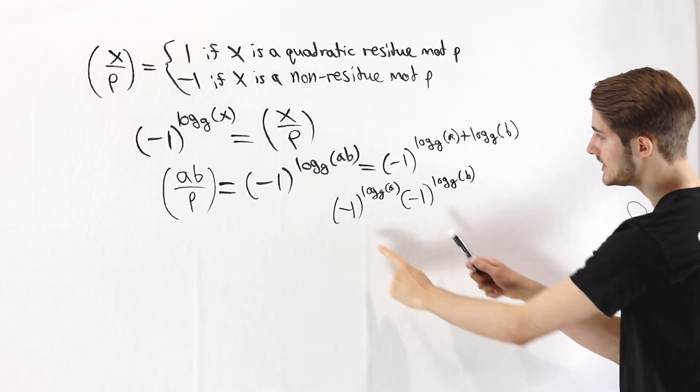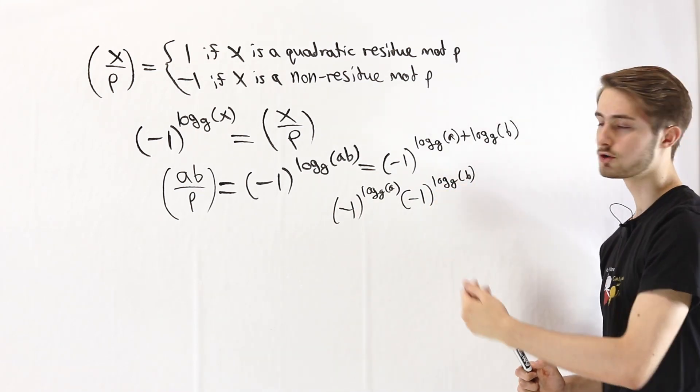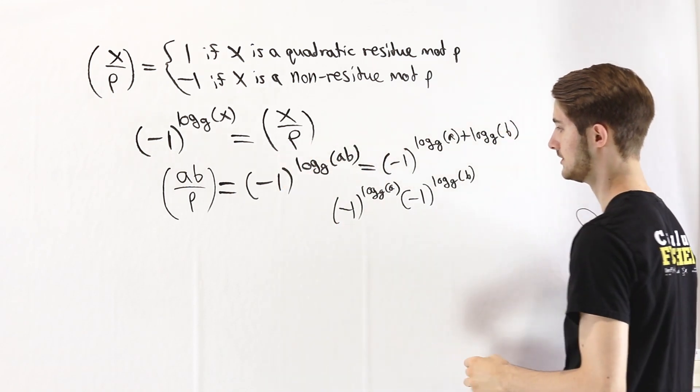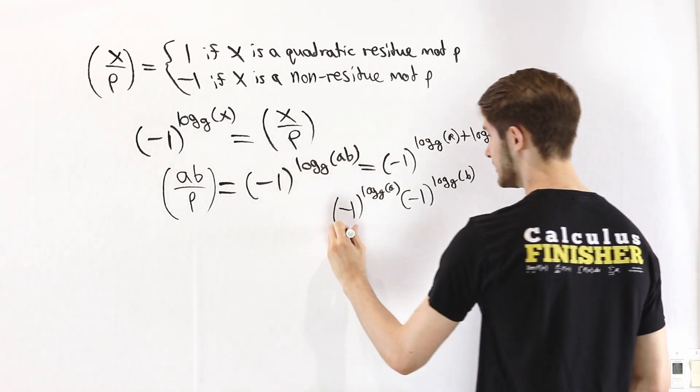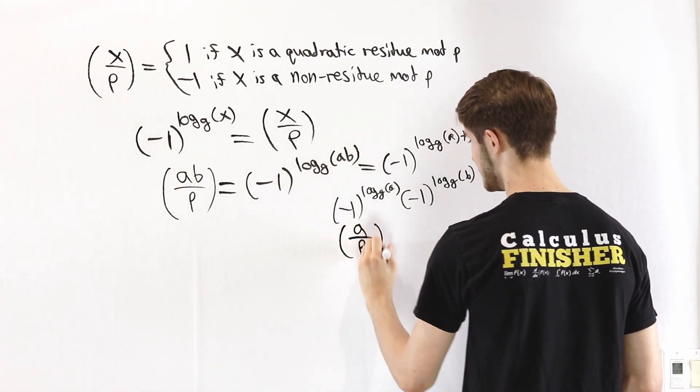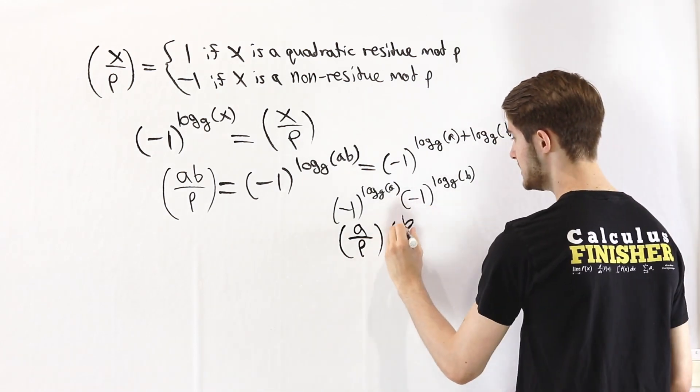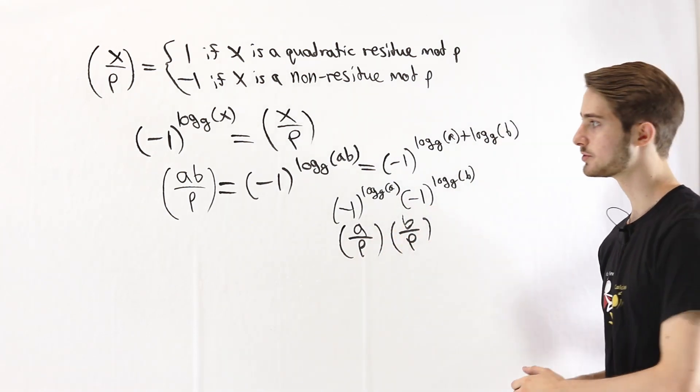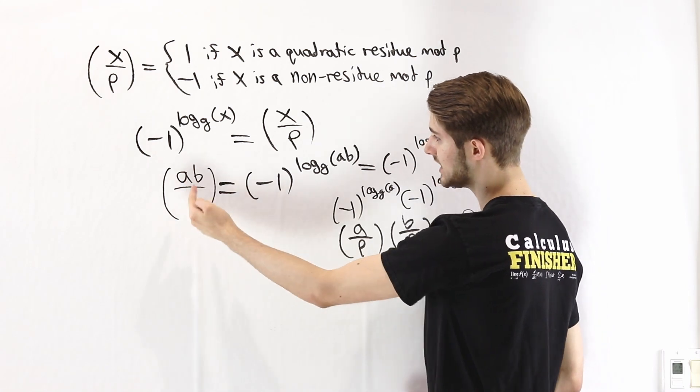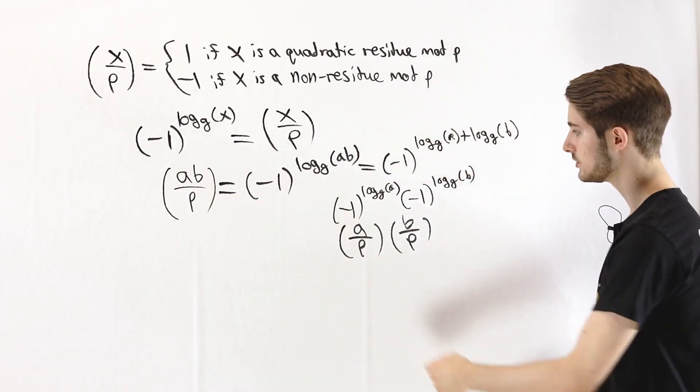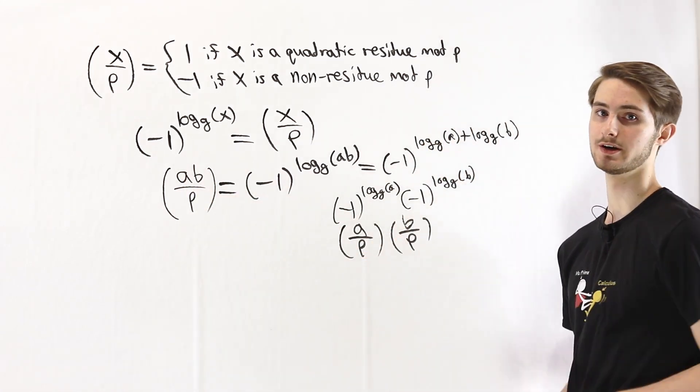But what we just showed earlier is that each of these gives us the equation for the Legendre symbol. So this left one right here is the Legendre symbol (a/p), and this right one is (b/p). And just like that we've proved that the Legendre symbol (ab/p) is equal to (a/p) times (b/p).